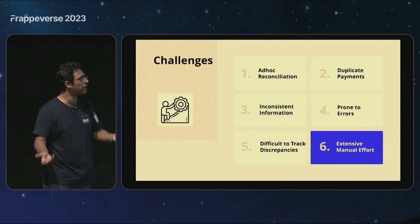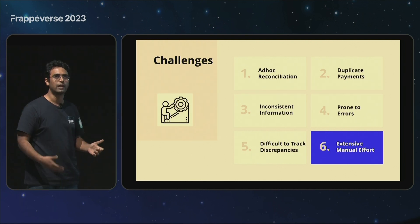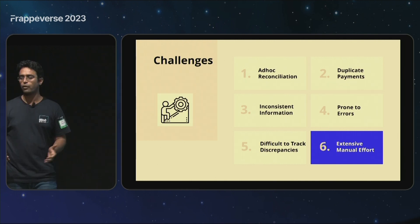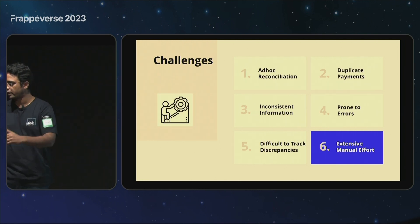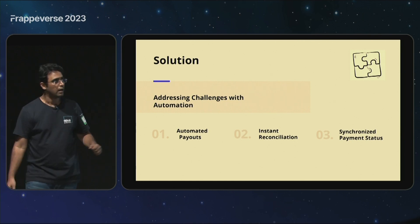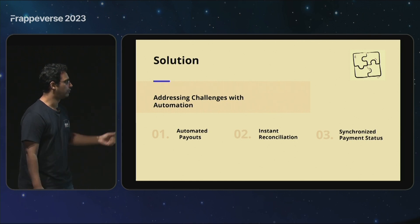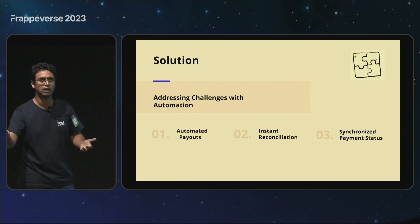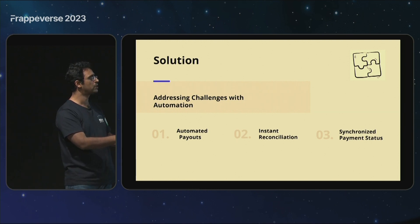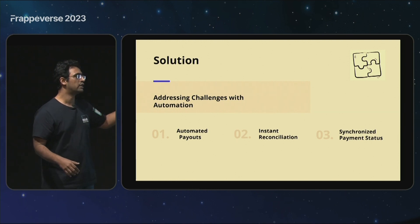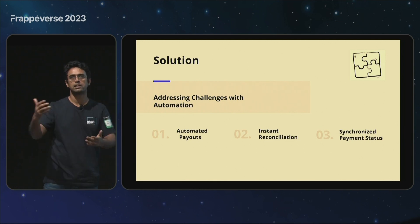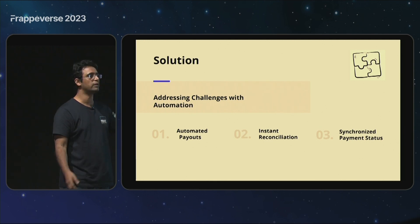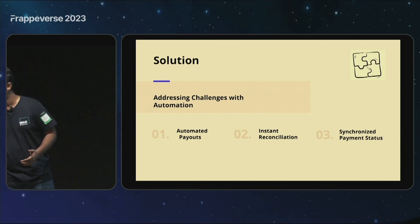In case of an error, it is that much more difficult to track, and in short, it is too much manual effort — which is what we plan to automate. The solution is a simple one: we will be doing automated payouts. Through those payouts, the references we get in responses allow us to do instant reconciliations, and on a success or failure response, we will synchronize the status of the payment entries.